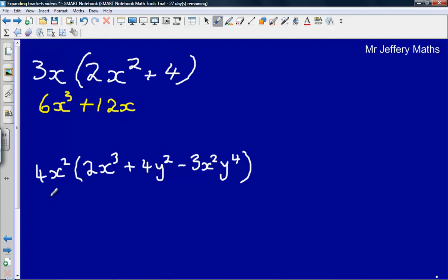Next one here, we've got 4x squared on the outside of the bracket and we are multiplying it by everything that's inside the bracket. So here I've got inside the bracket, 2x cubed plus 4y squared minus 3x squared y to the power of 4.